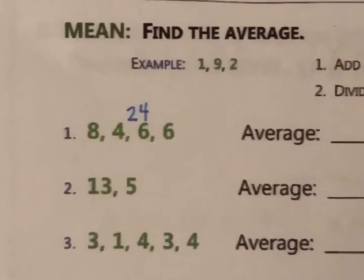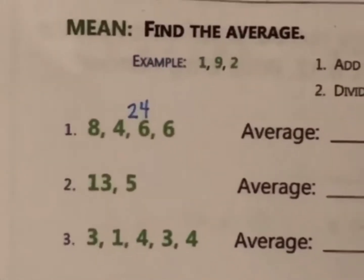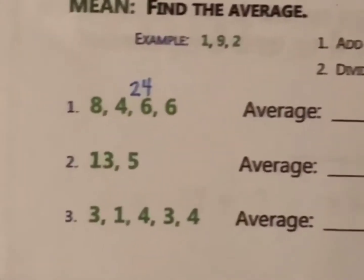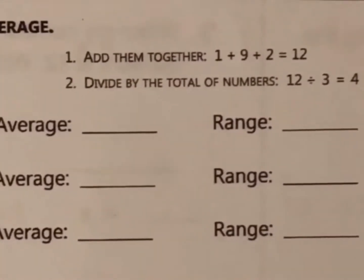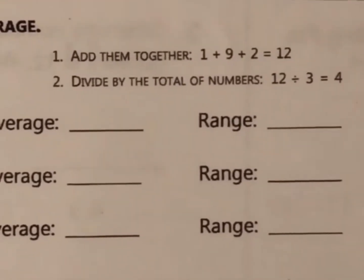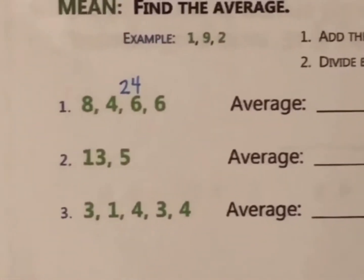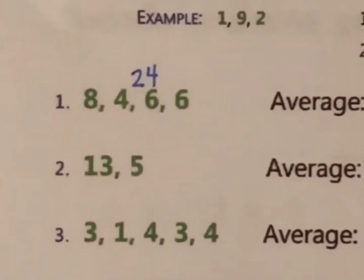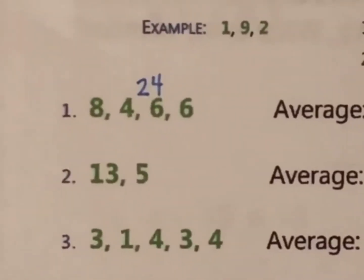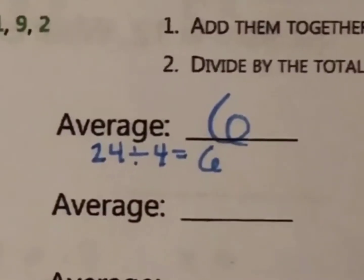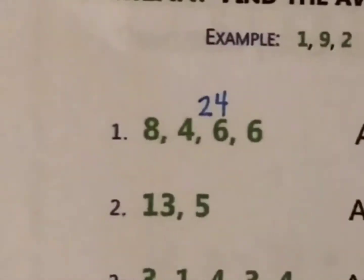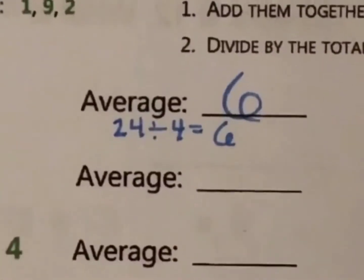When I find the sum, I usually just like to write it on top of them. So now, that was step 1, I added them together. Step 2, divide by the total of numbers. There are 1, 2, 3, 4 numbers, so I will divide by 4. So, 24 divided by 4, because there are 4 numbers, is 6, so the average is 6.